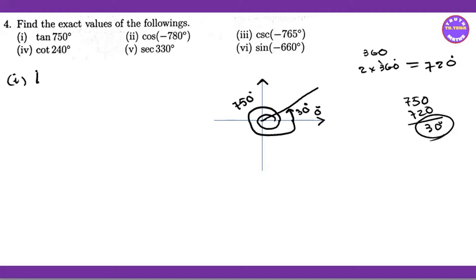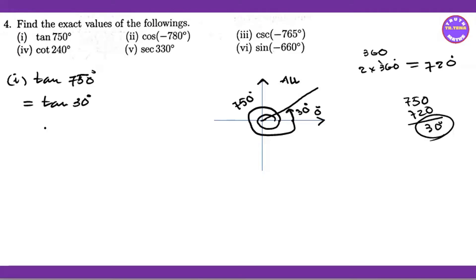Number one is tangent 750 degrees. So tangent 750 degrees — if you look at the acute angle in the first quadrant, all of your functions — sine, cos, tangent — are positive. So tangent is positive, and the acute angle is positive.